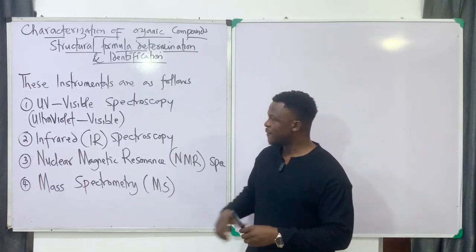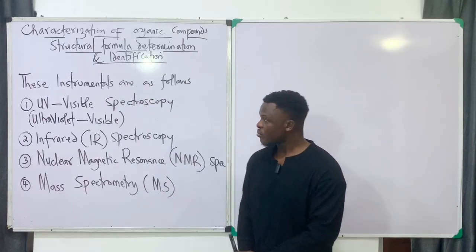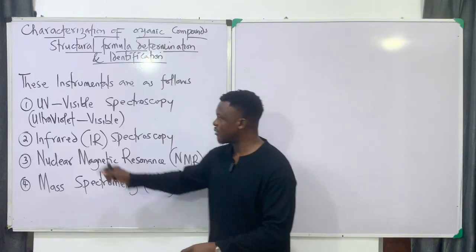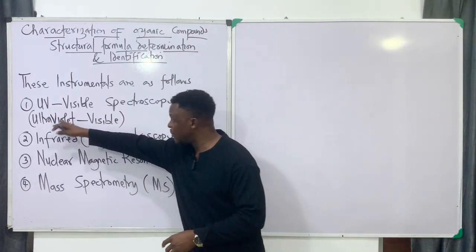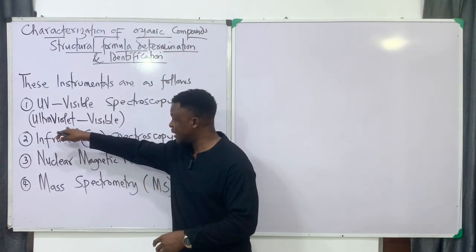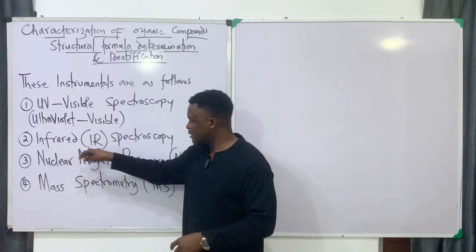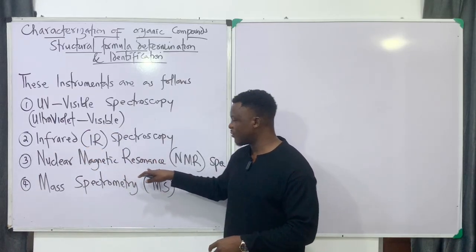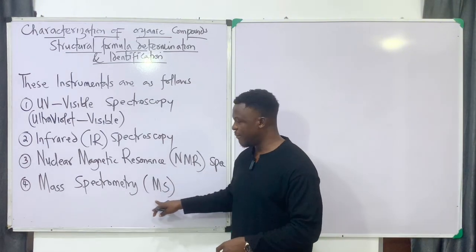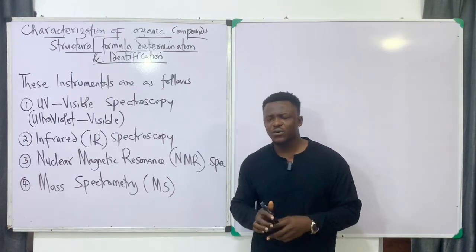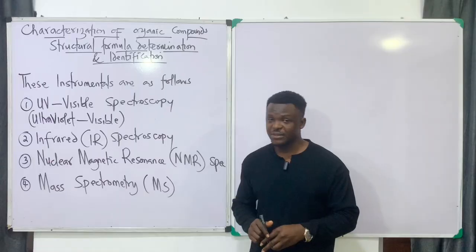We have four spectroscopic methods of analysis. First, UV visible spectroscopy — UV means ultraviolet visible. Second, infrared, IR. Third, nuclear magnetic resonance, NMR. Fourth, mass spectrometry, MS. It is important to take note of these acronyms, just in case of exams.